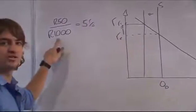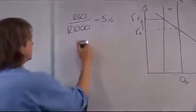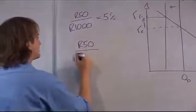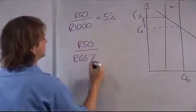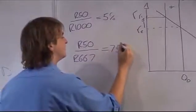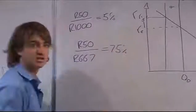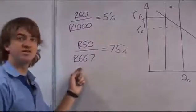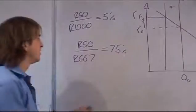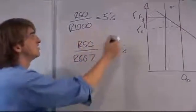But now if the price of the bond decreases, then you are still getting fifty rand at regular intervals, but the price is now six hundred and sixty-seven. The interest rate or the yield that you are going to be receiving is seven point five percent. So price is inversely related to the return or the yield you are going to get on your bond. As the price decreases, the interest rate increases.